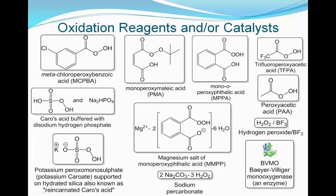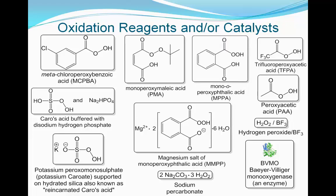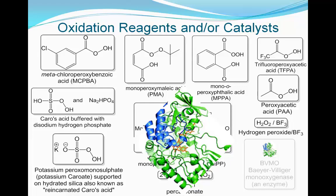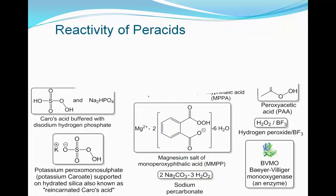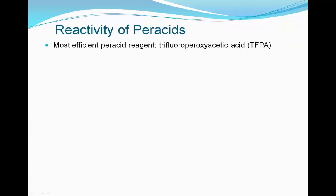The reagents which can be employed in Baeyer-Villiger oxidation include metachloroperoxybenzoic acid, monoperoxymaleic acid, monoorthoperooxyphthalic acid, trifluoroperoxyacetic acid, Caro's acid buffered with disodium hydrogen phosphate, magnesium salt of monoperoxyphthalic acid, peroxyacetic acid, potassium peroxymonosulfate supported on hydrated silica (also known as reincarnated Caro's acid), sodium percarbonate, hydrogen peroxide with boron trifluoride, and Baeyer-Villiger monooxygenase, which is an enzyme abbreviated as BVMO.